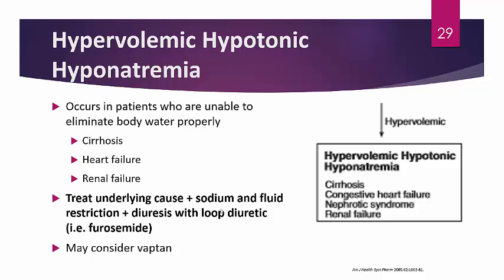Treat the underlying cause if possible, though conditions like cirrhosis or heart failure may not be fully reversible — better management of them will help. Restrict sodium and fluid intake, as the patient likely already has enough sodium. Restrict fluid so the concentration self-corrects. A loop diuretic such as furosemide may be needed to remove excess volume. A vaptan may also be considered here, though utility is debatable and is not first-line.